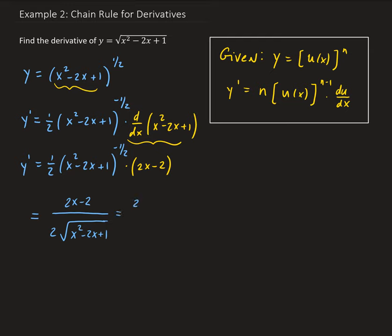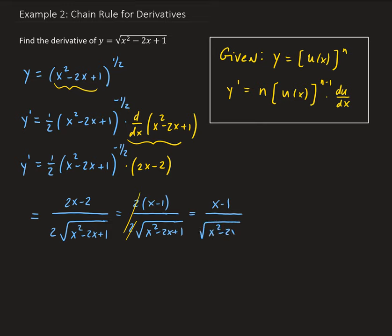We can factor out a 2 from the numerator, so the 2s cancel out, leaving us with x minus 1, all divided by the square root of x squared minus 2x plus 1.